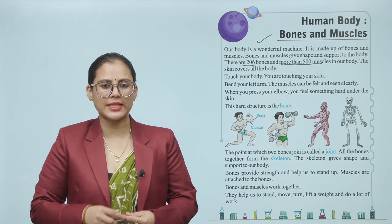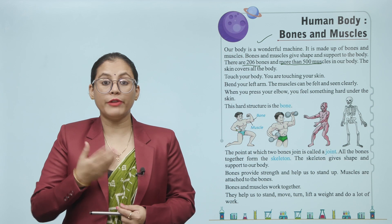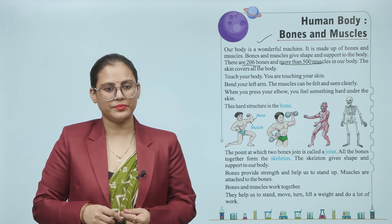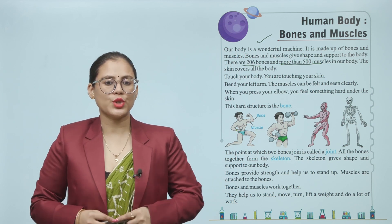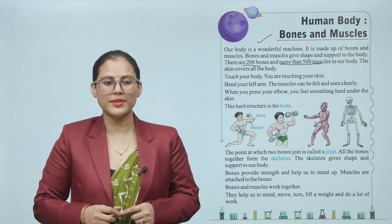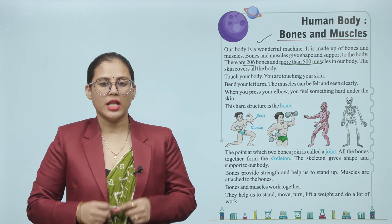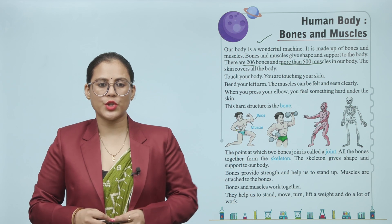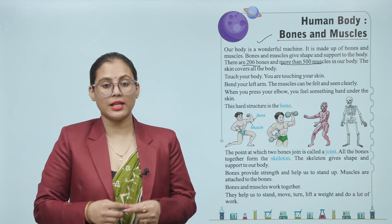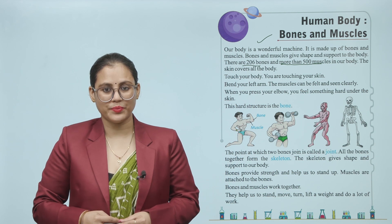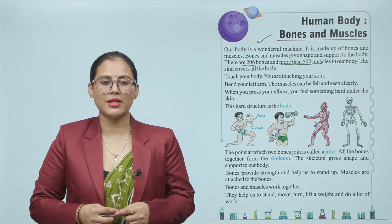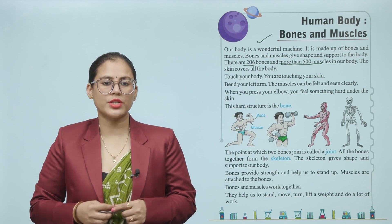That hard structure is the bone. The point at which two bones join is called a joint. All the bones together form the skeleton. The skeleton gives shape and support to our body. Bones provide strength and help us to stand up. Muscles are attached to the bones. Bones and muscles work together.